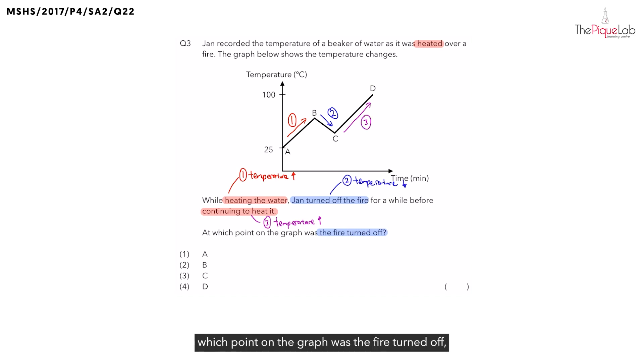Now, they want us to find out which point on the graph was the fire turned off. Which number should we be looking at? 1, 2, or 3 on the graph? We should be looking at number 2. But for number 2, there are two points: B and C. How do we know which was the point when the fire was first turned off? When the fire was first turned off is when the temperature starts to decrease. Which point shows you the temperature starting to decrease? Was it B or was it C? We can see clearly it must have been point B. That's why the correct answer should be option 2.